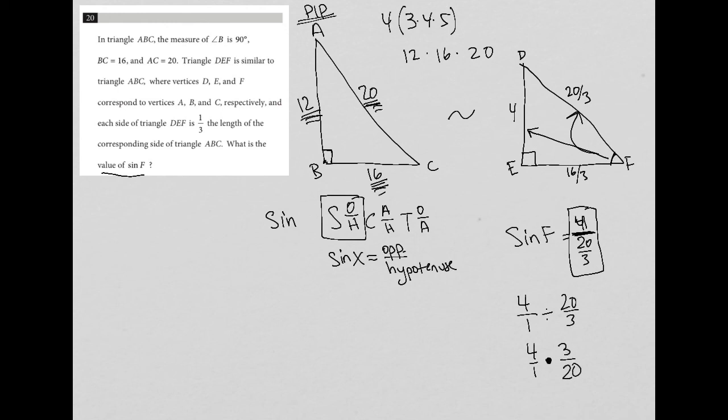So 4 over 1 times 3 over 20, well, that's just going to be, I can multiply straight across. I know I can cross cancel here as well. So if you know how to do that, by all means, please do it. You get to the answer a little bit faster. But otherwise, if I multiply straight across, I end up with 12 over 20. I want to reduce this fraction. The greatest common factor between 12 and 20 is 4. So 4 goes into 12 three times, and 4 goes into 20 five times. And therefore, the answer to this question is going to be three-fifths.